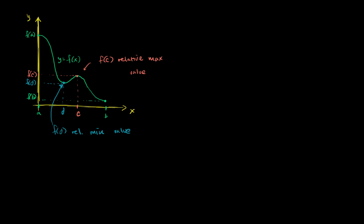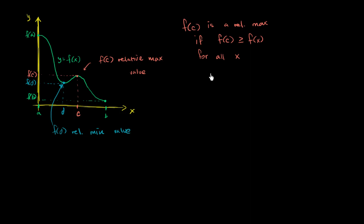But how could we write that mathematically? Here I'll give you the definition that is just a more formal way of saying what we just said. We say that f of c is a relative maximum value if f of c is greater than or equal to f of x for all x near c. More rigorously, for all x within an open interval of c minus h to c plus h, where h is some value greater than zero.